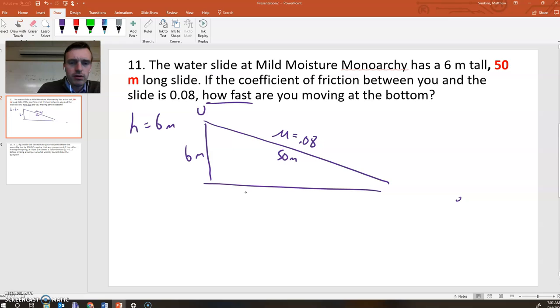All right. Well, at the top, we have all UG. And at the bottom, we're going to have all K because we are at a height of zero. However, we just said in the last problem that the total energy before is equal to the total energy after, unless work is done by a non-conservative force.